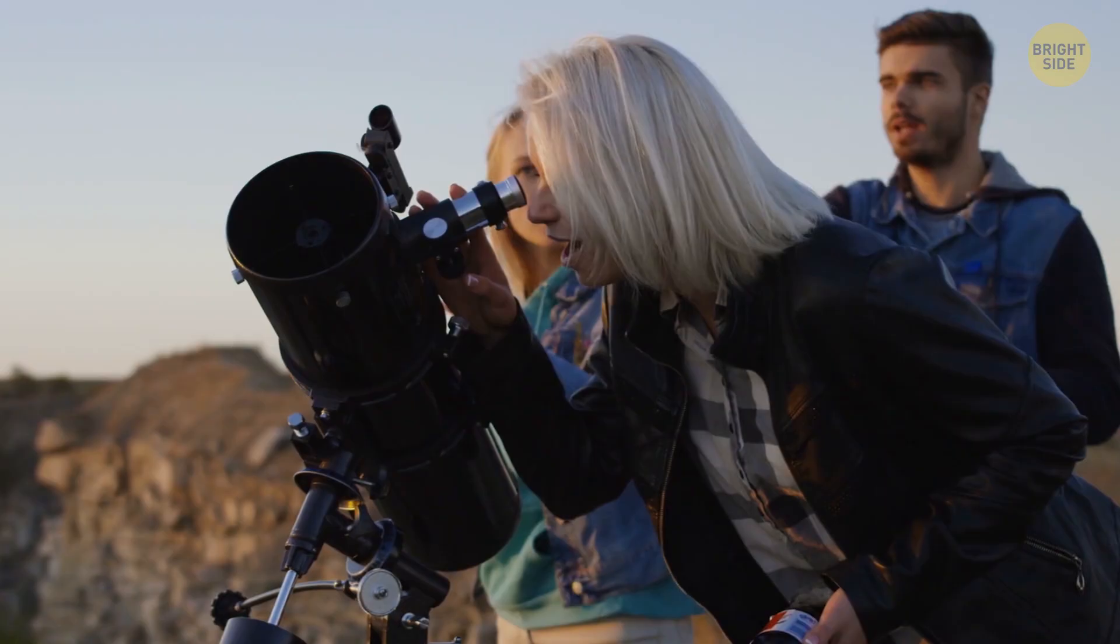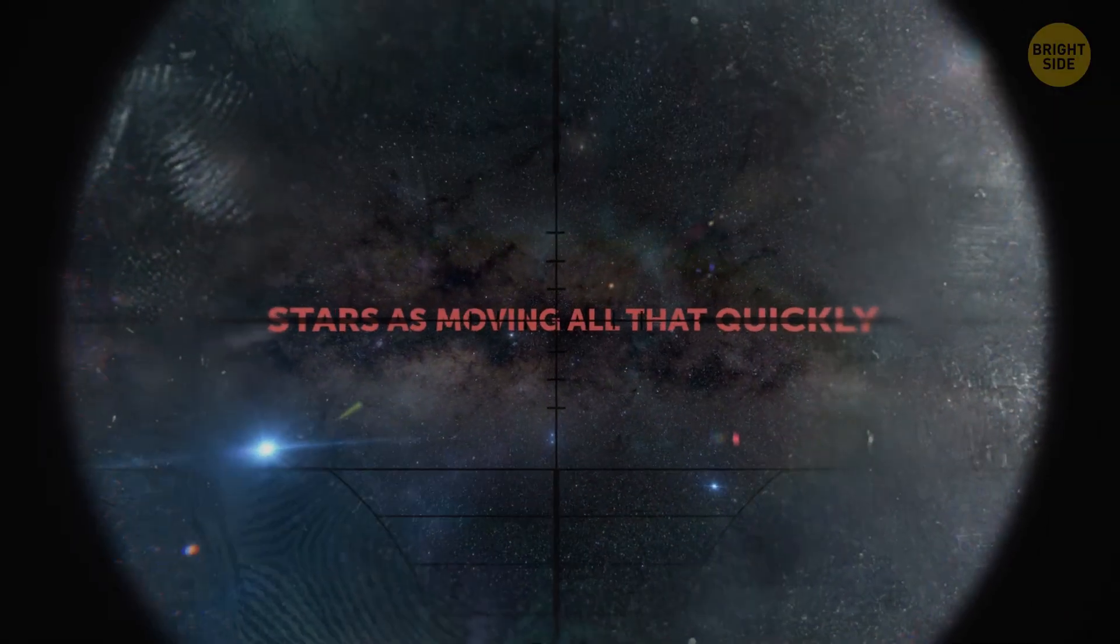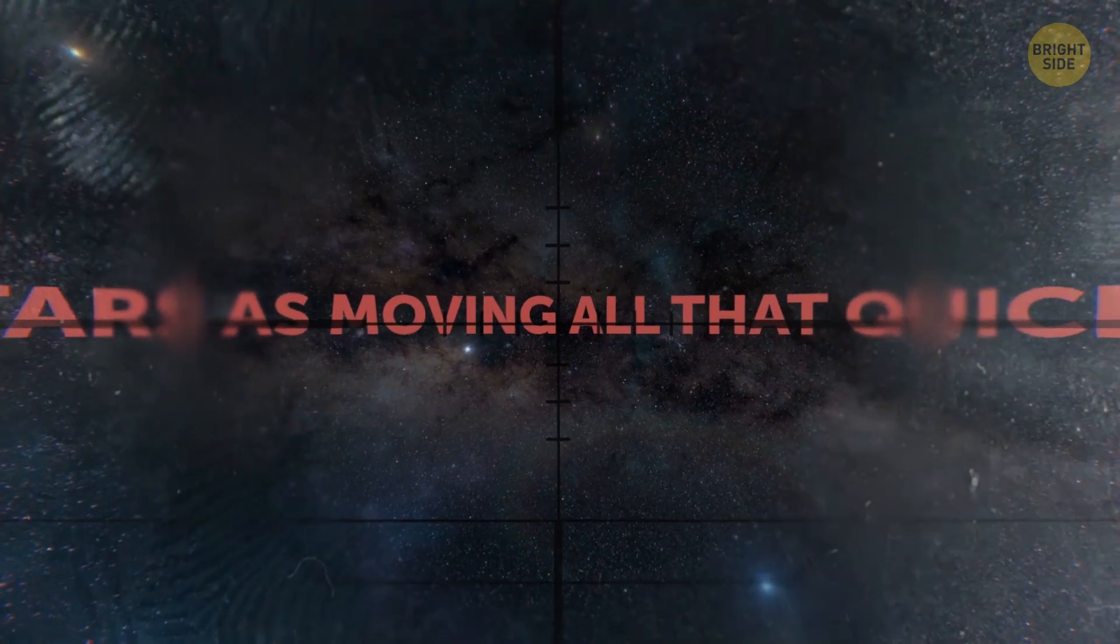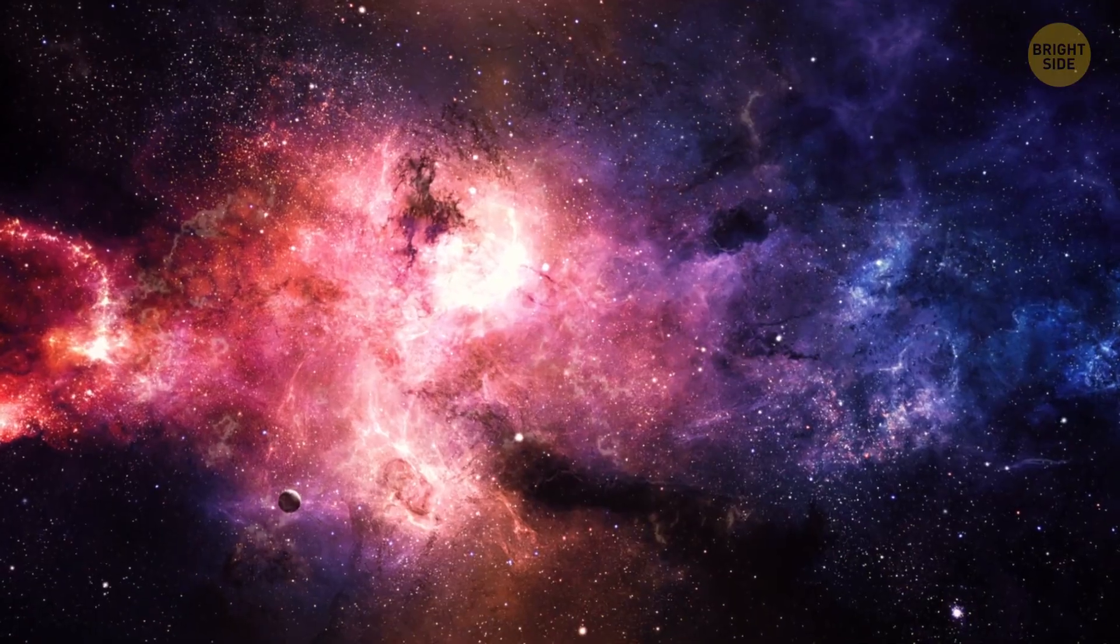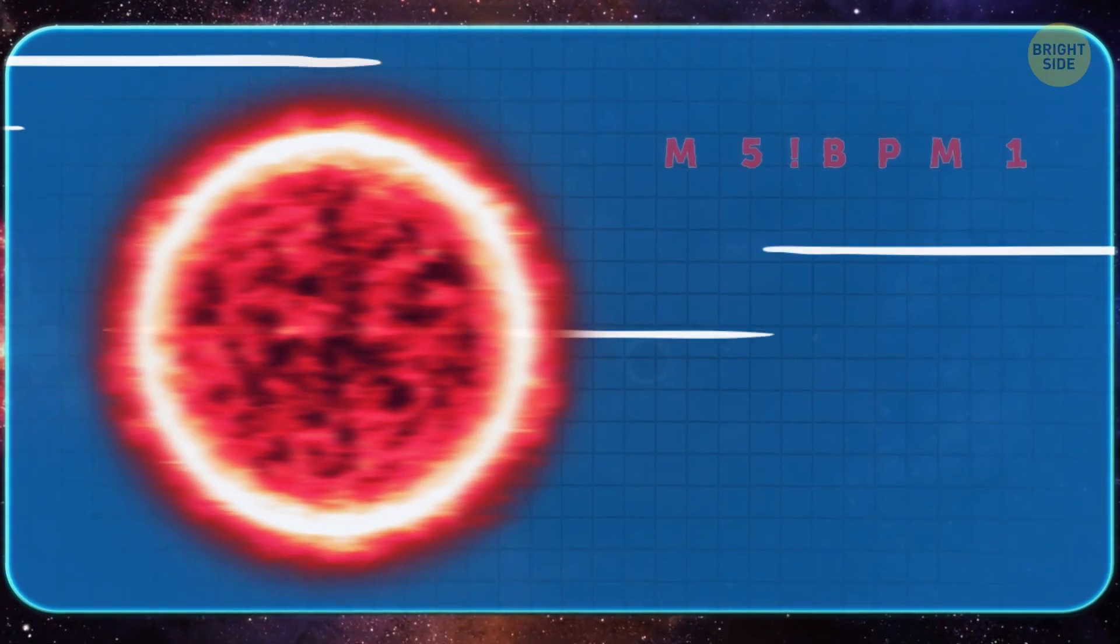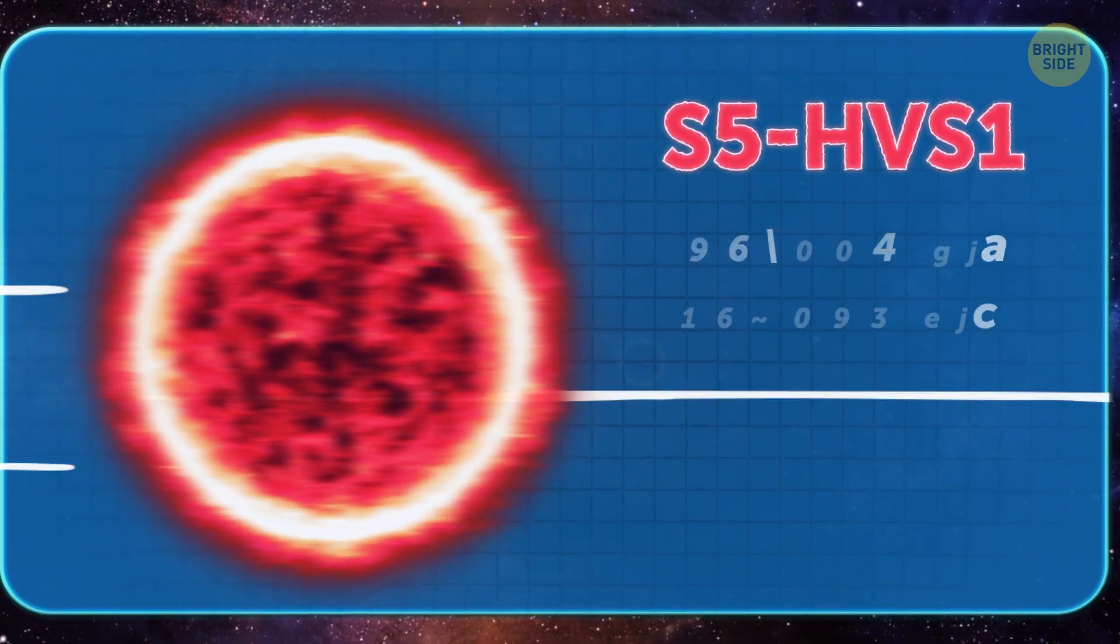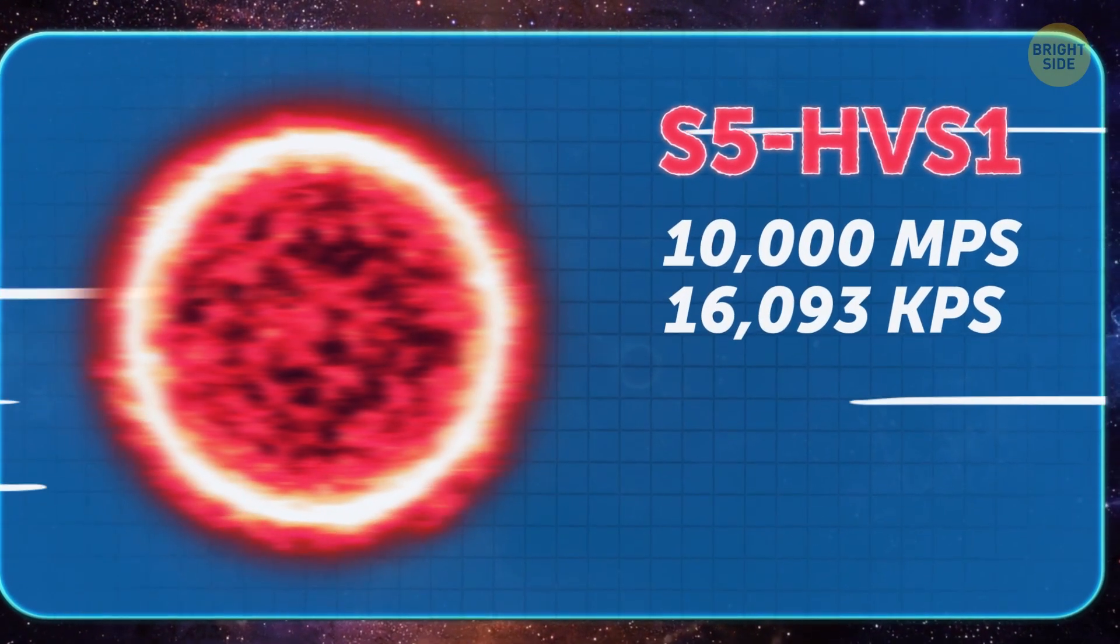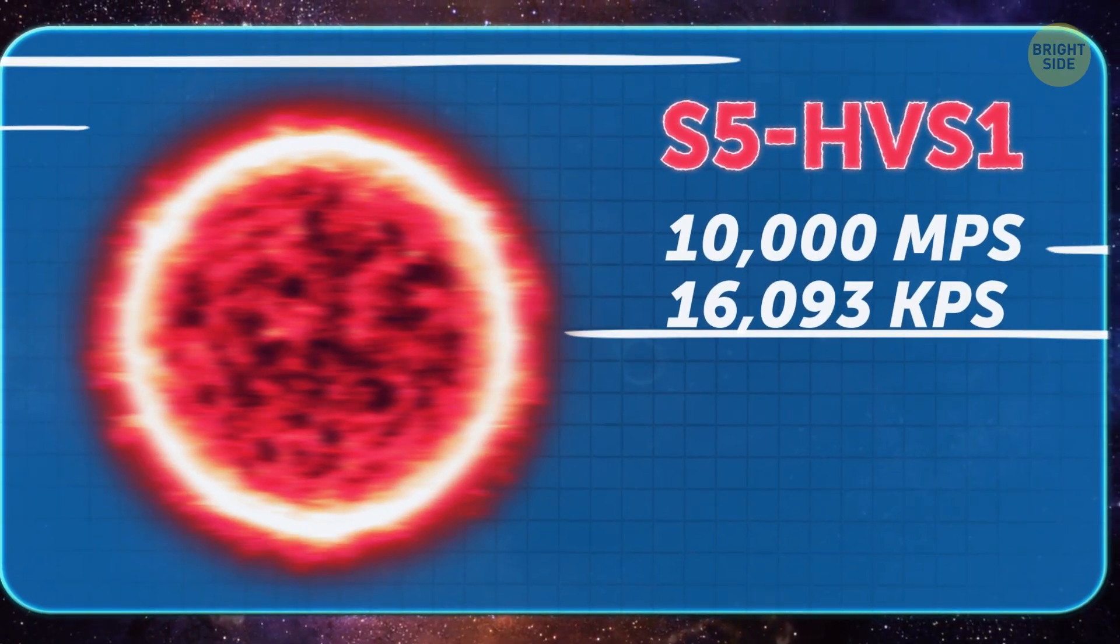Well, hi! Unless you're an astronomer, you probably don't think of stars as moving all that quickly. You might not even know that they move at all. If that's the case, you'd be surprised to learn that a star called S5HVS1 is zipping through our galaxy at over 10,000 miles per hour!